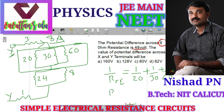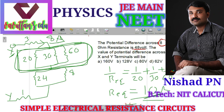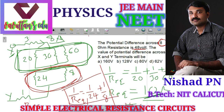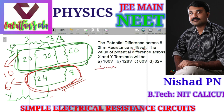Simplifying that, R-equivalent equals 10 ohm. So the first section is reduced to 10 ohm. For the second section, 24 ohm and 8 ohm are in parallel: 1/R-equivalent equals 1/24 plus 1/8, giving R-equivalent equal to 6 ohm. So we have 3 ohm, 10 ohm, 6 ohm, and 1 ohm resistances.